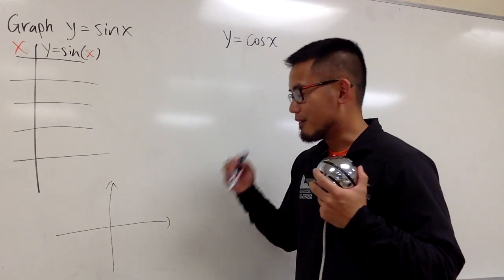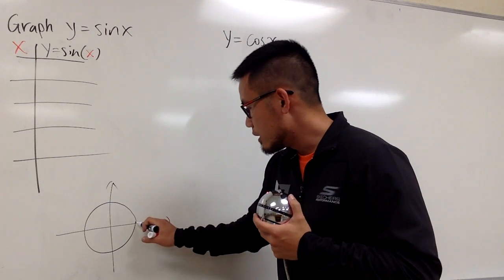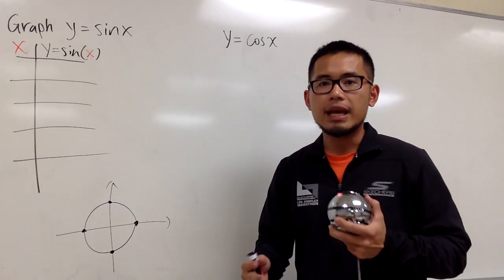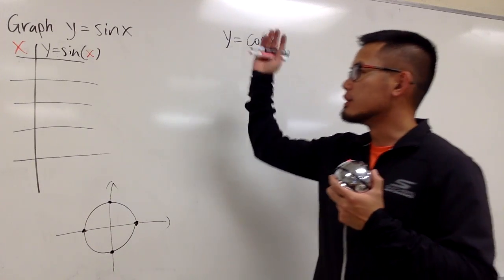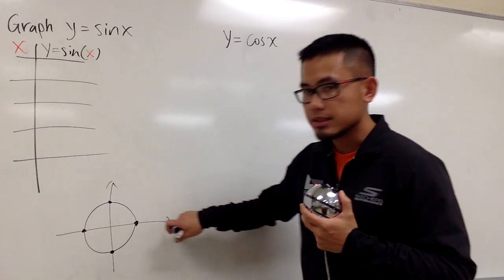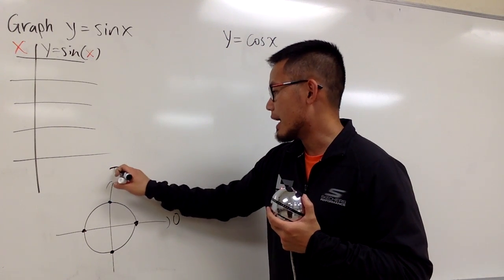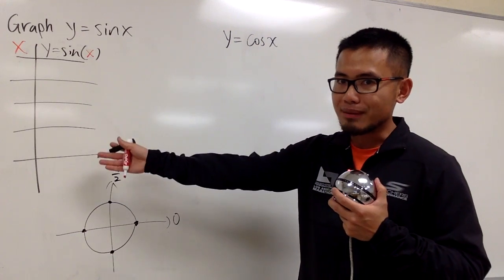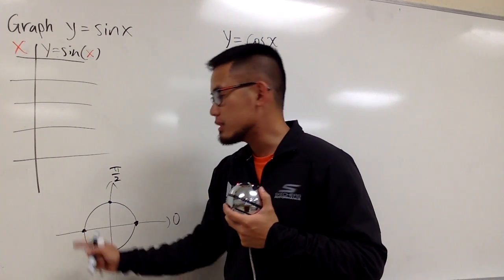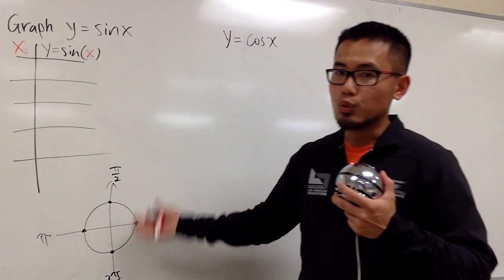You don't have to memorize everything, just four important ones. Let me draw the unit circle. The four points are this one, this one, this one, and this one. These four points are going to tell you the highest, the lowest, and the x-intercepts for sine and cosine graphs. On the unit circle, this is 0 degrees, same as 0 radians. This is 90 degrees, same as pi over 2. For graphs, always use radians, no degrees. Going around, we have 180 degrees, which is pi radians.